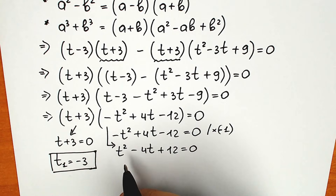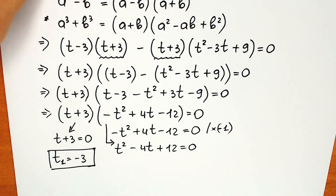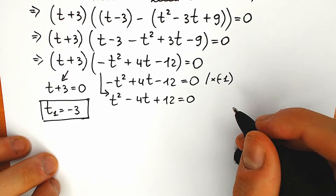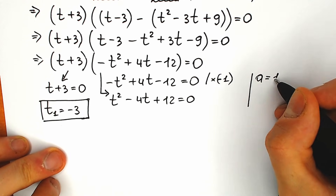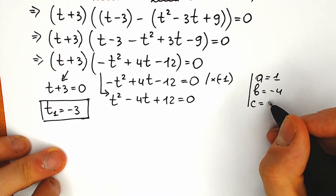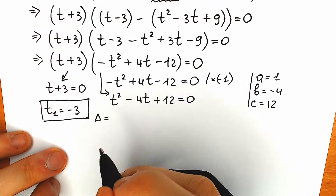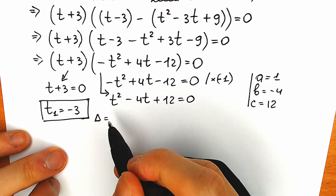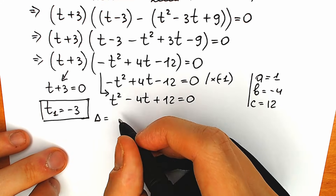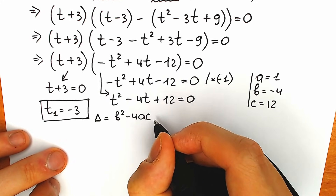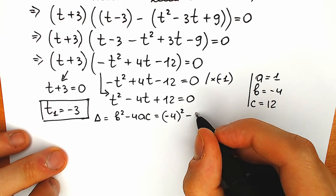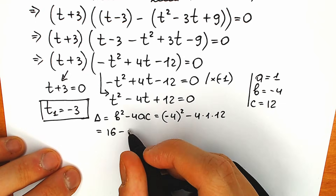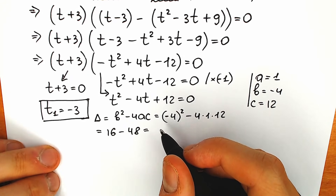This quadratic equation can be solved with the method of coefficients: a equals 1, b equals minus 4, c equals 12. Let's find the discriminant: D equals b squared minus 4ac equals 16 minus 48 equals minus 32. Our discriminant is less than zero, so we have two complex roots.